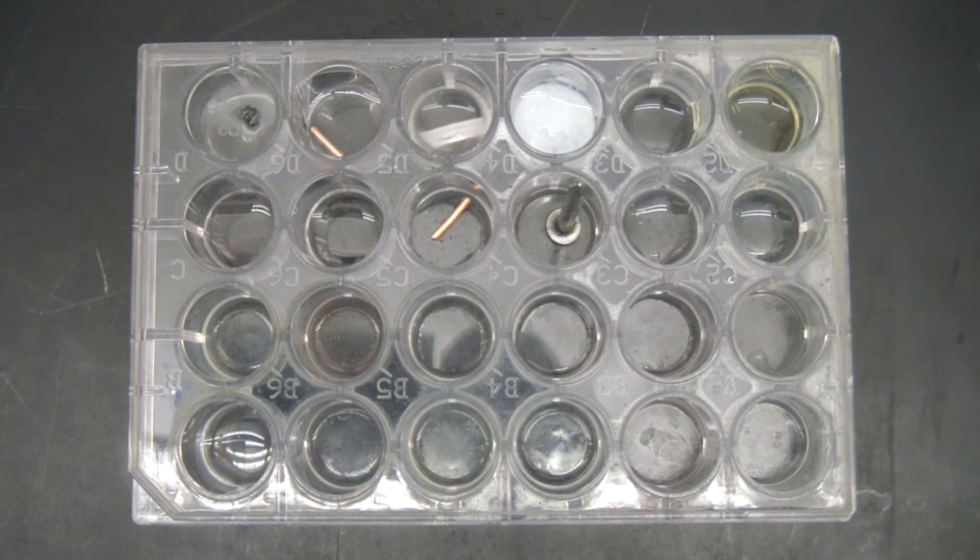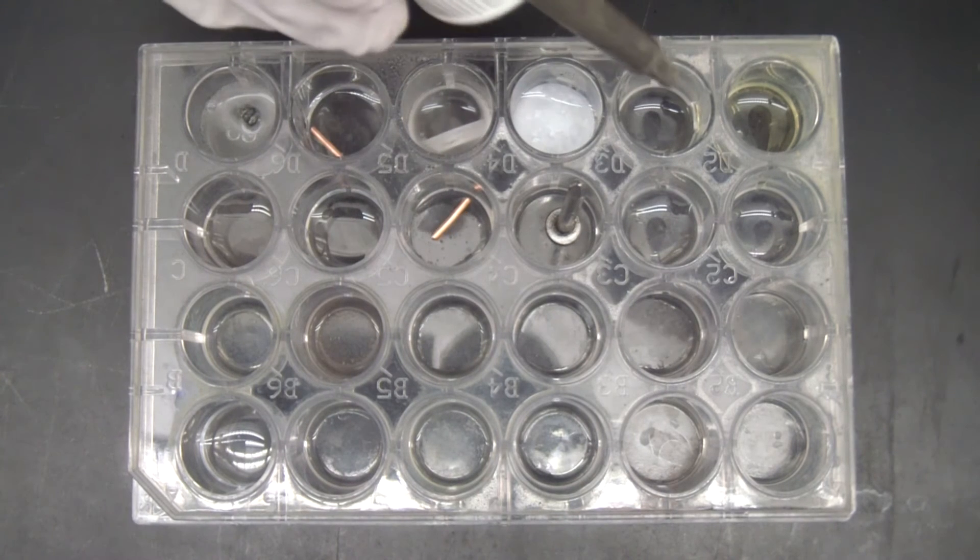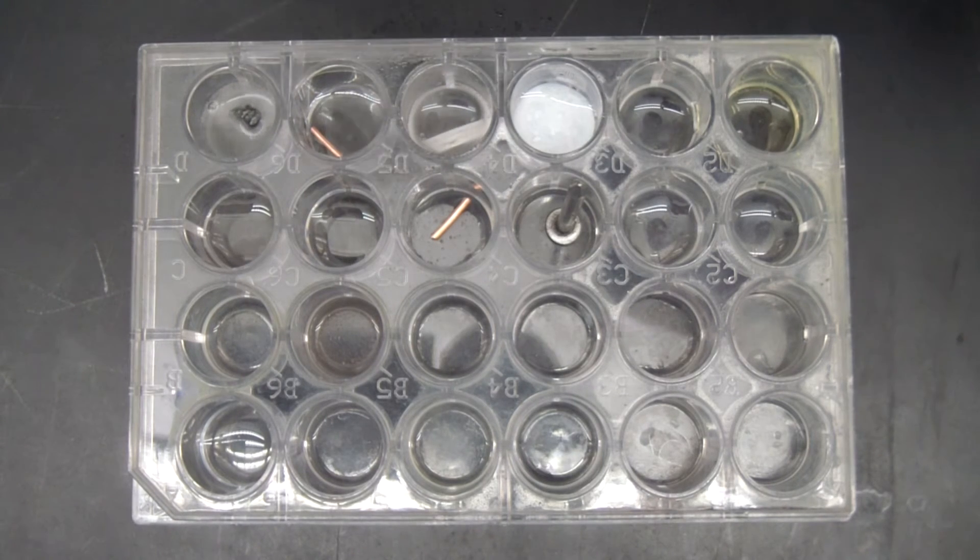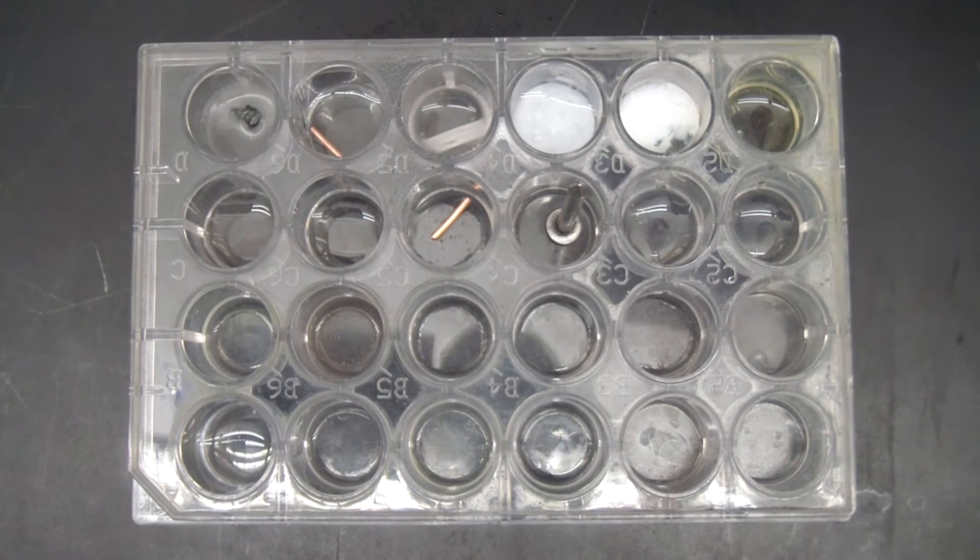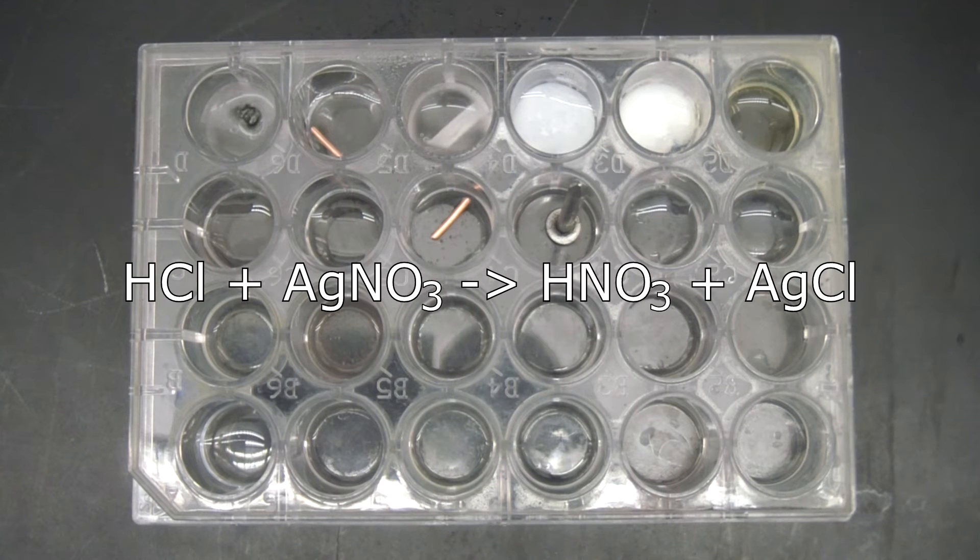Okay, directly next to that is hydrochloric acid already in there, and I'm going to add some silver nitrate to that. Let's get some silver nitrate first. And you can see that also makes another white precipitate, which follows this particular equation.